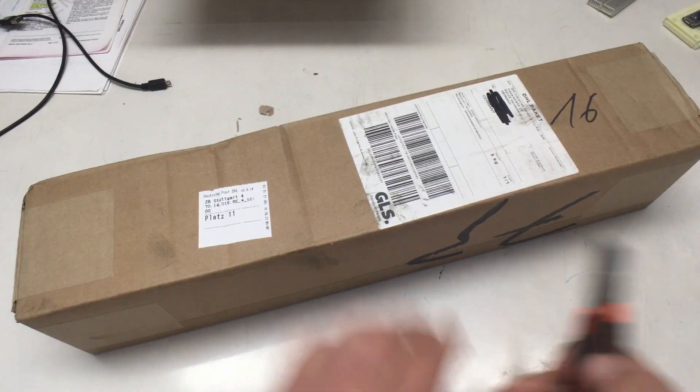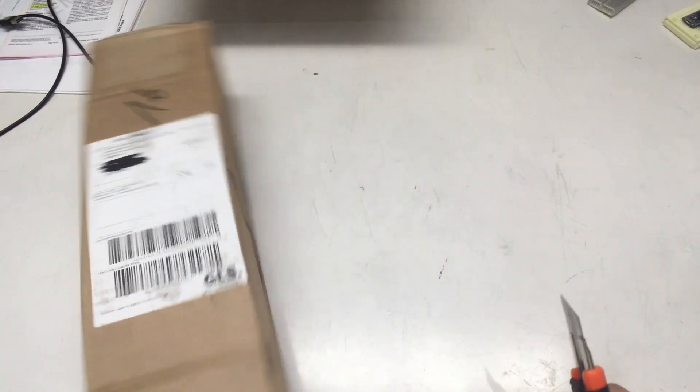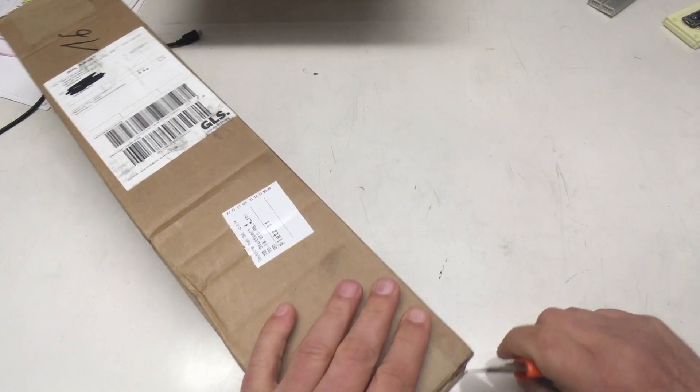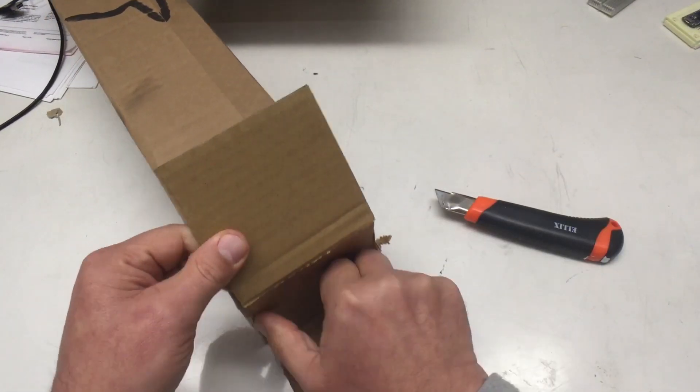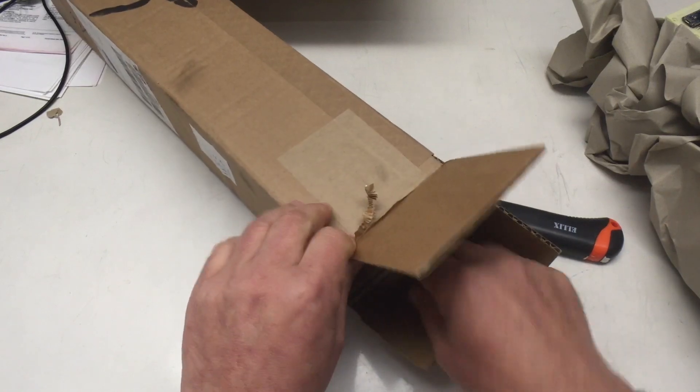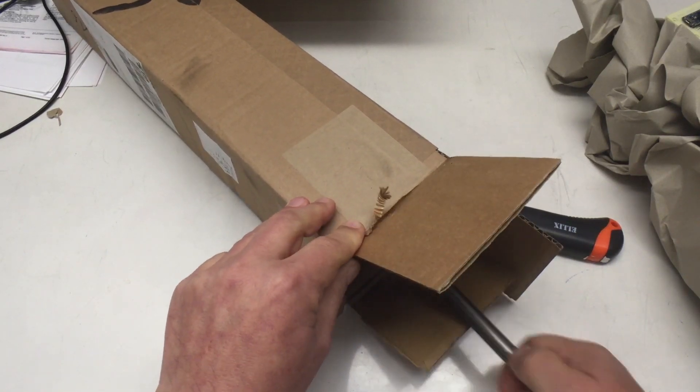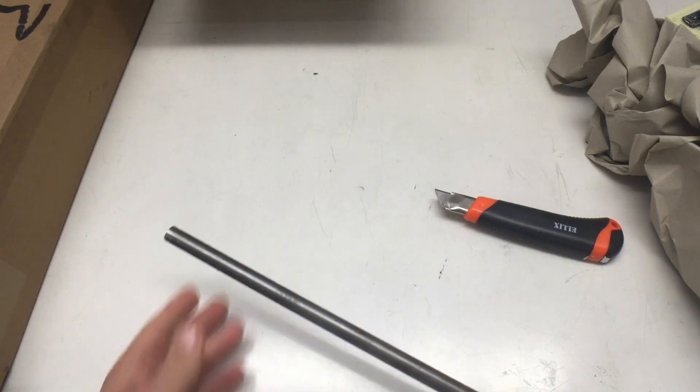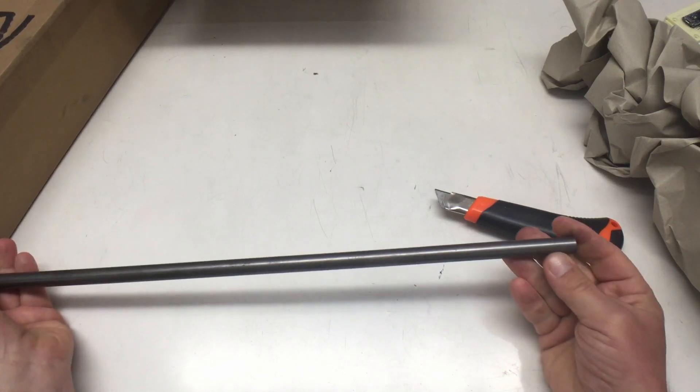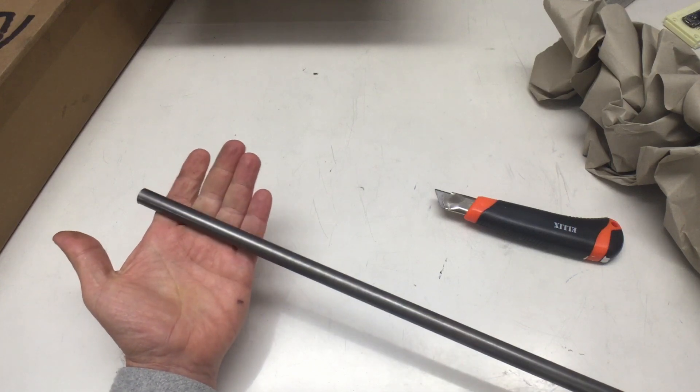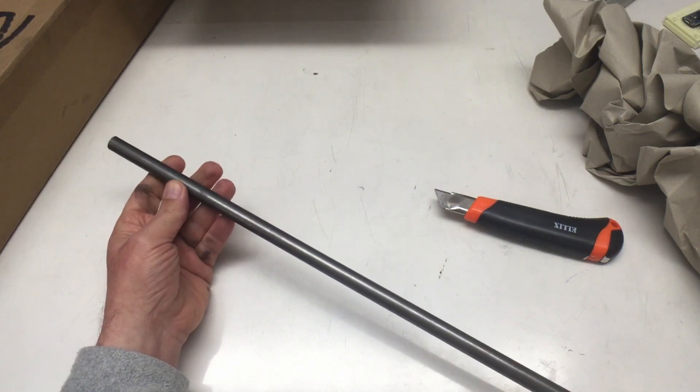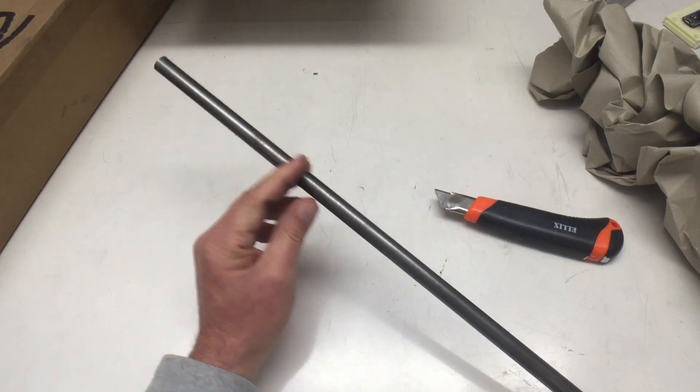Next, another rather large box here. I have no idea where I should open that. Let's try this side. Okay, there's lots of paper in here. And okay, yeah, that should be a 13mm or 14mm, I can't really remember, steel, mild steel rod.